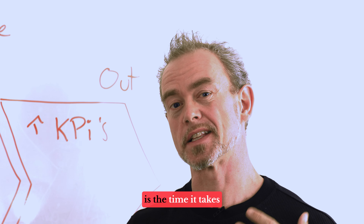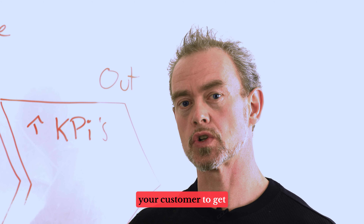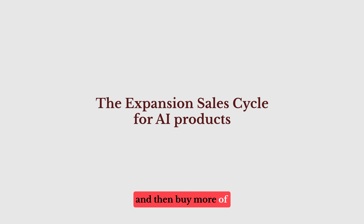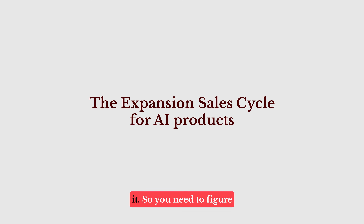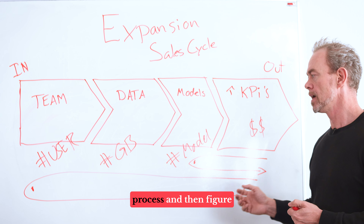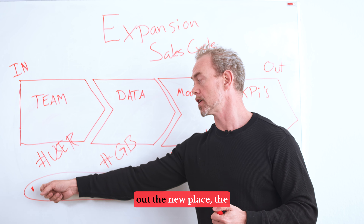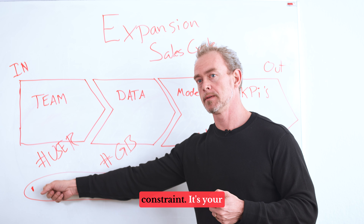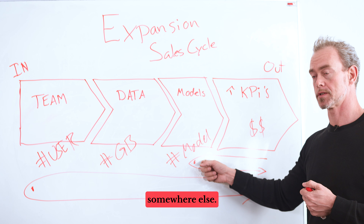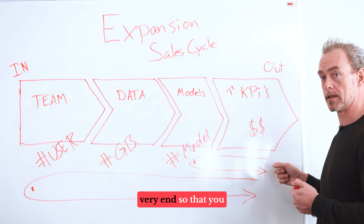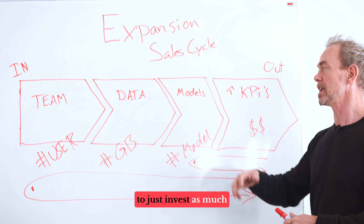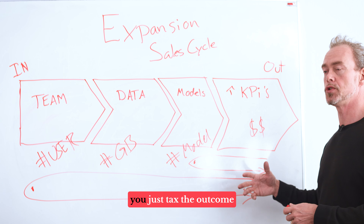The expansion sales cycle is the time it takes your customer to get value from your product and then buy more of it. You need to figure out the value creation process and then figure out where you place the constraint. It's your fault. You need to place the constraint somewhere else — preferably at the very end — so that you just get the customer to invest as much as they can and then you just tax the outcome.